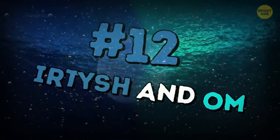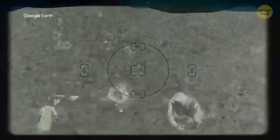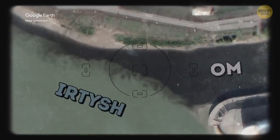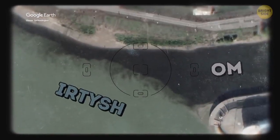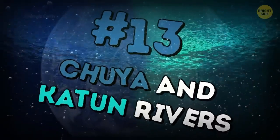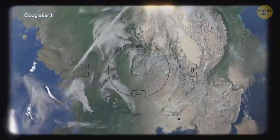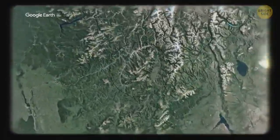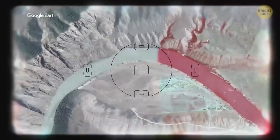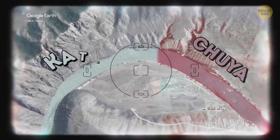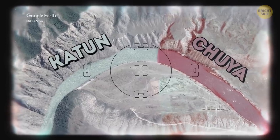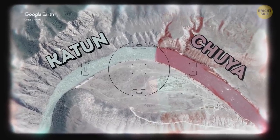Irtysh and Om: These two rivers flow into each other in Omsk, Russia. The Irtysh is cloudy and the Om, pure and transparent. Chuya and Katun rivers meet in the Altai Republic, Russia. The water of the Chuya has an unusual cloudy white color here and looks dense and thick. Katun is clean and turquoise. Flowing into each other, they form a single, two-colored flow that does not mix for some time.